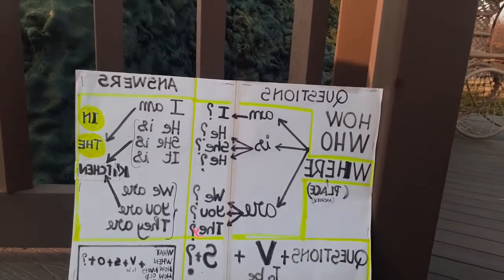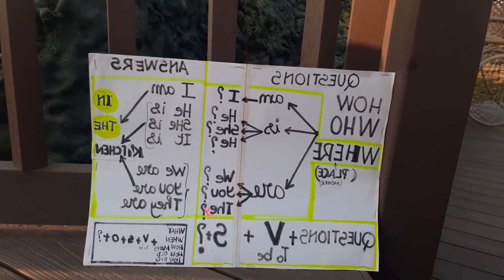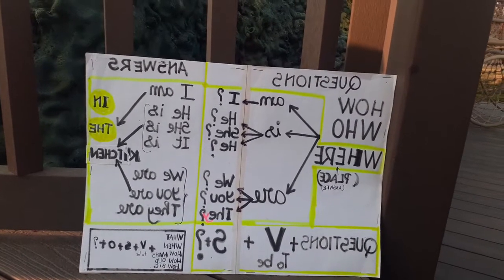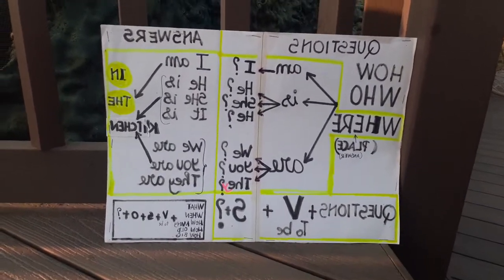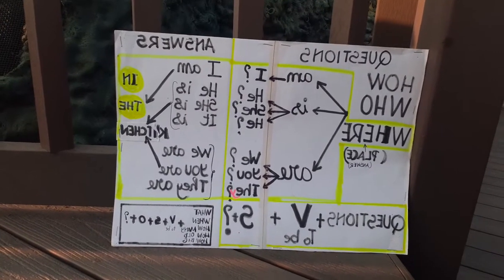For example: 'Who am I?' 'How, where am I?' — 'I am in the dinosaur park.' Question word, plus verb, plus subject, plus question mark. That's all. Enjoy the sunset, guys — I'm enjoying it too.